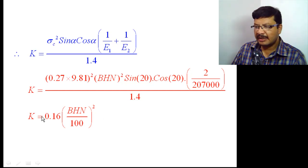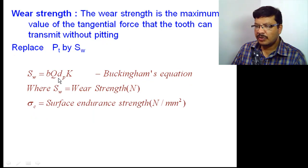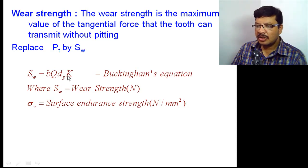Now you know how to calculate the k value — if you know the Brinell hardness number, you get the k value. Once you know k, Sw = b · q · dp · k, where b is the face width, q is the ratio factor, dp is the pitch circle diameter of the pinion, and k is the load factor obtained from the Brinell hardness number.